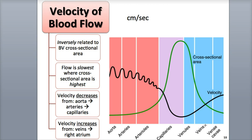As the venules drain the capillary beds and merge into the larger diameter veins, the total cross-sectional area decreases, and blood velocity increases.